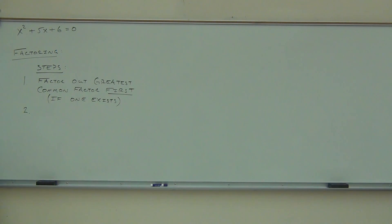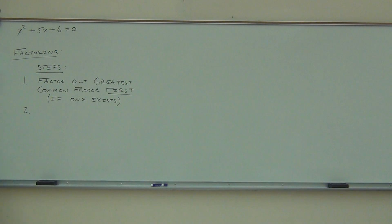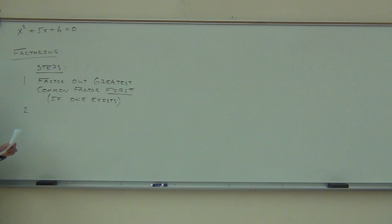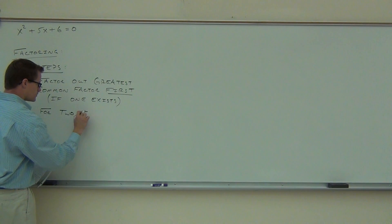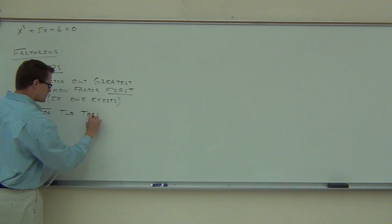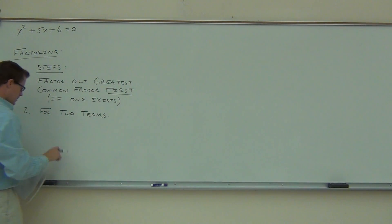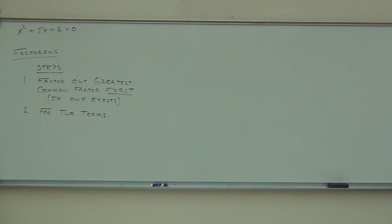The first thing you check is the greatest common factor — get it done. Next, you count the number of terms that you have. Terms are those things separated by pluses and minuses — that's how we count number of terms. If you have two terms, there are a couple things we can do.